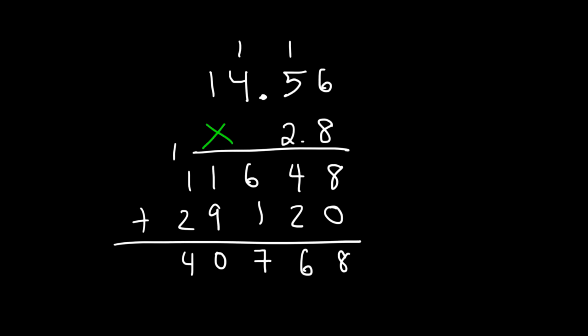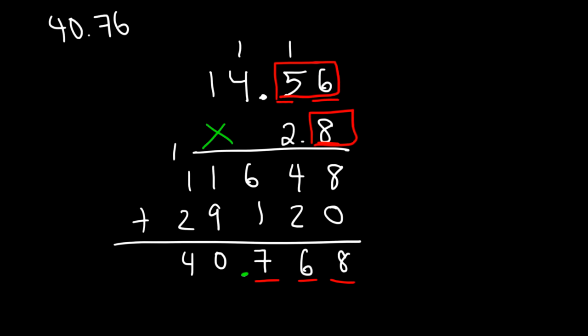Now, where should we put the decimal? Looking at the original problem, the first number has 2 digits to the right of a decimal point, and the second number only has 1. Therefore, our final answer should have a total of 3 numbers to the right of the decimal point. So the answer is 40.768.